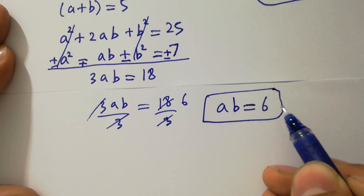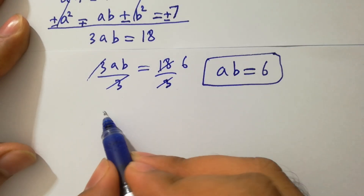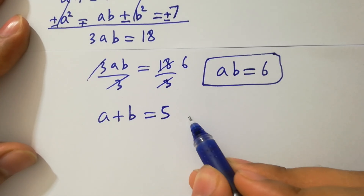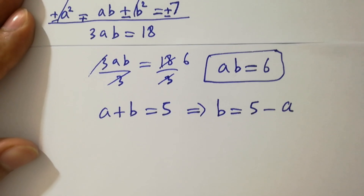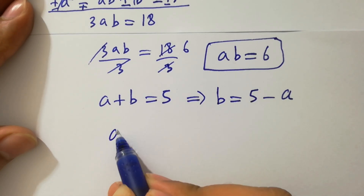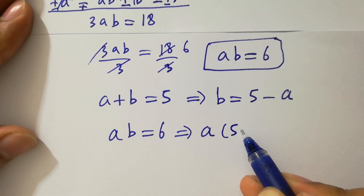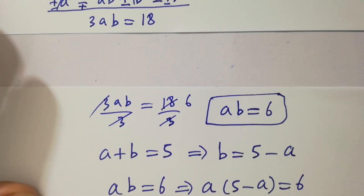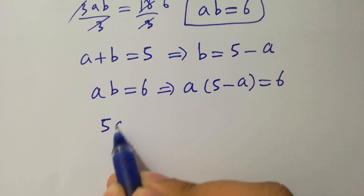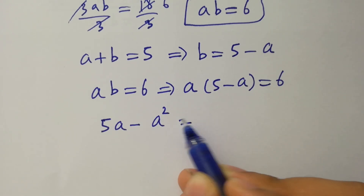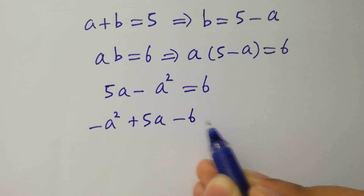The product ab equals 6 and we know a plus b equals 5, so b equals 5 minus a. Substituting into ab equals 6: a times 5 minus a equals 6, giving 5a minus a squared equals 6. Rearranging: minus a squared plus 5a minus 6 equals 0.